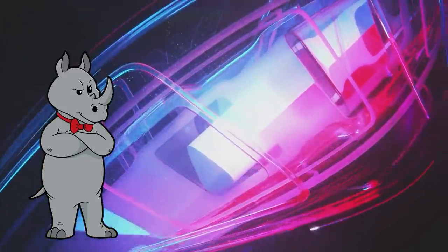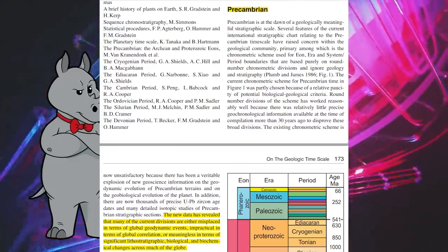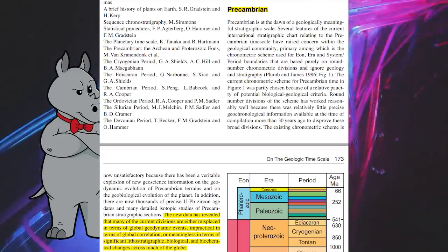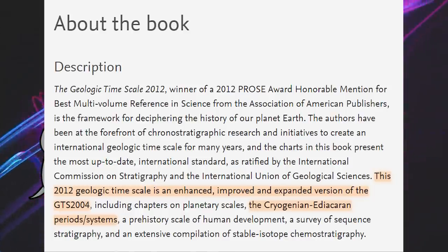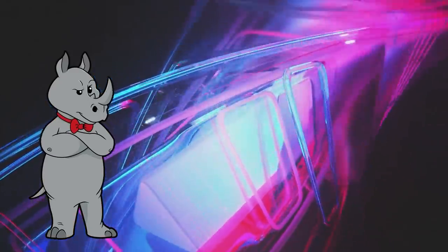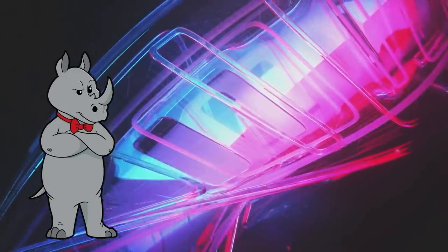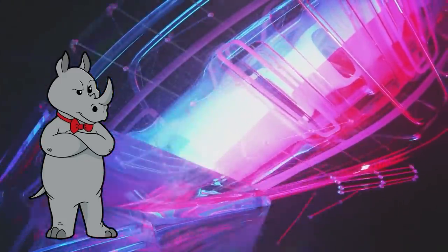Yep. That was in their section on the Precambrian, which is a period of time that includes the Cryogenian and the Edea Caron. If you read the description of the book they wrote, the GTS 2012, it was supposed to be an improved and expanded version of the GTS 2004. One of the expansions they made was a chapter on the Cryogenian-Edea Caron period-slash-system. So that quote that you're reading is part of their explanation as to why it was necessary for them to add that section into the book. The new data has revealed that the old data was not specific enough, so a new chapter was needed to correct that.